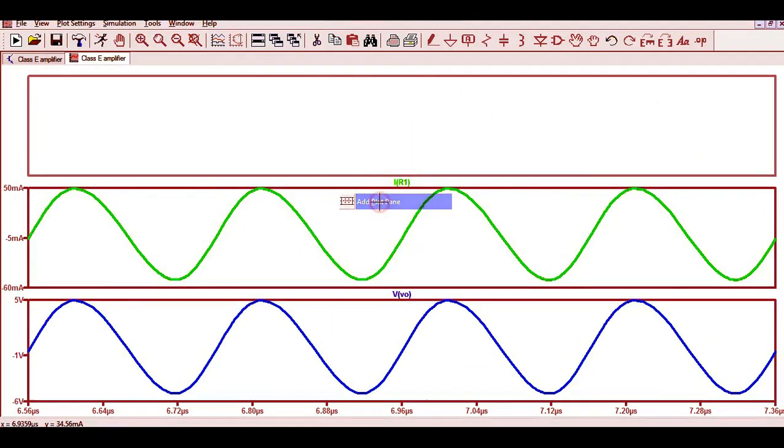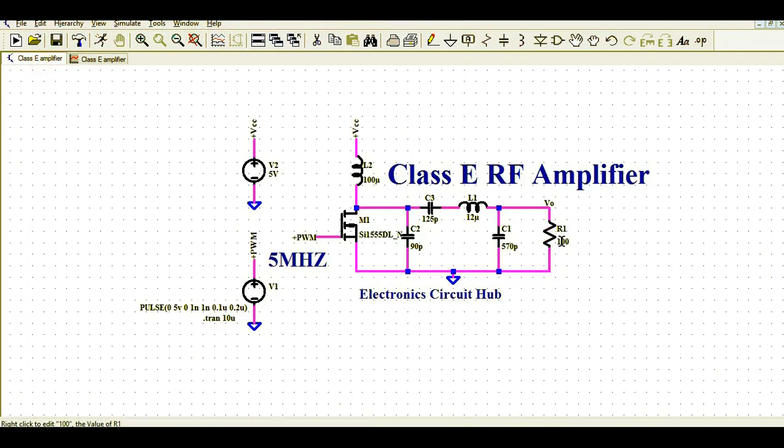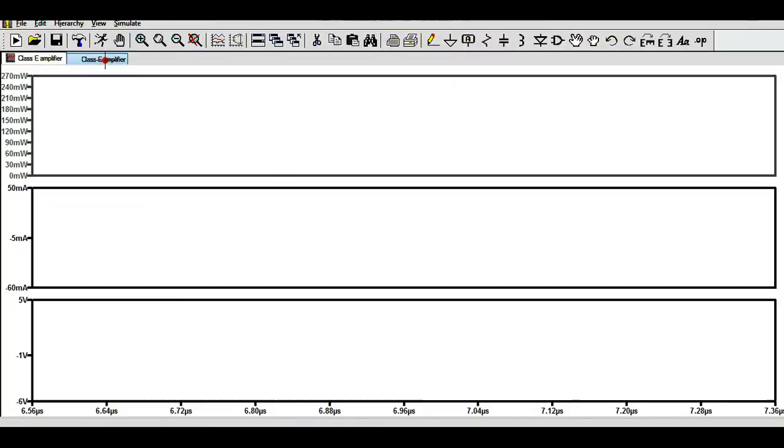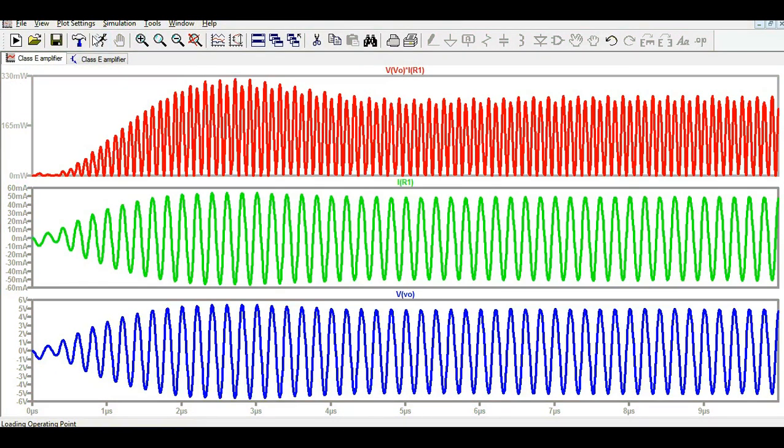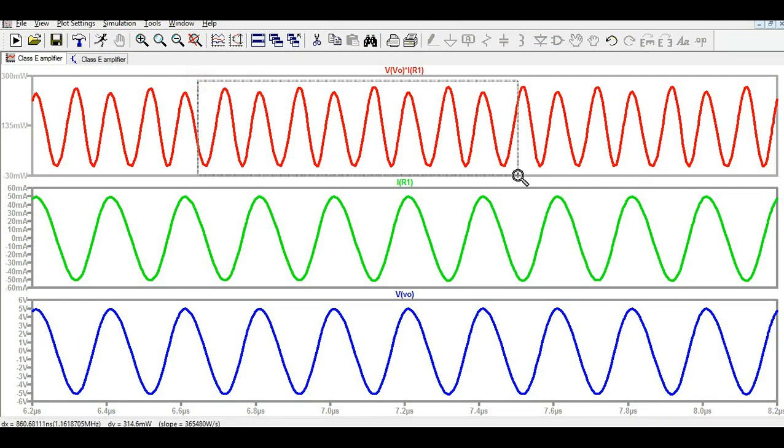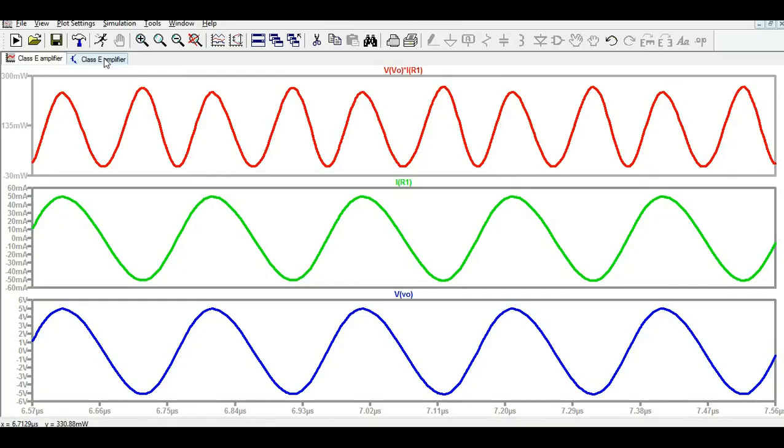Let me add one more plot pane and show you the output power. In order to get the output power, you have to press control plus alt on your keyboard. Once you press control plus alt, you can see the power of your amplifier. And now you can see here, the power of my amplifier is around 262 milliwatt. If you want to see, you can see your power, how your power looks like. This is your power of amplifier and how it looks like.